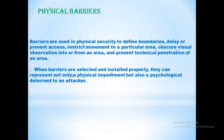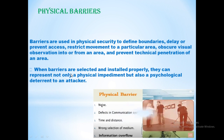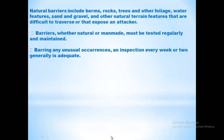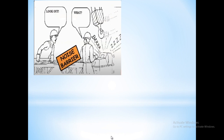Next is physical barriers. What are physical barriers? Physical barriers are disturbances that occur in communication. Physical barriers include: noise, defects in communication systems, time and distance, wrong selection of medium, and information overload.